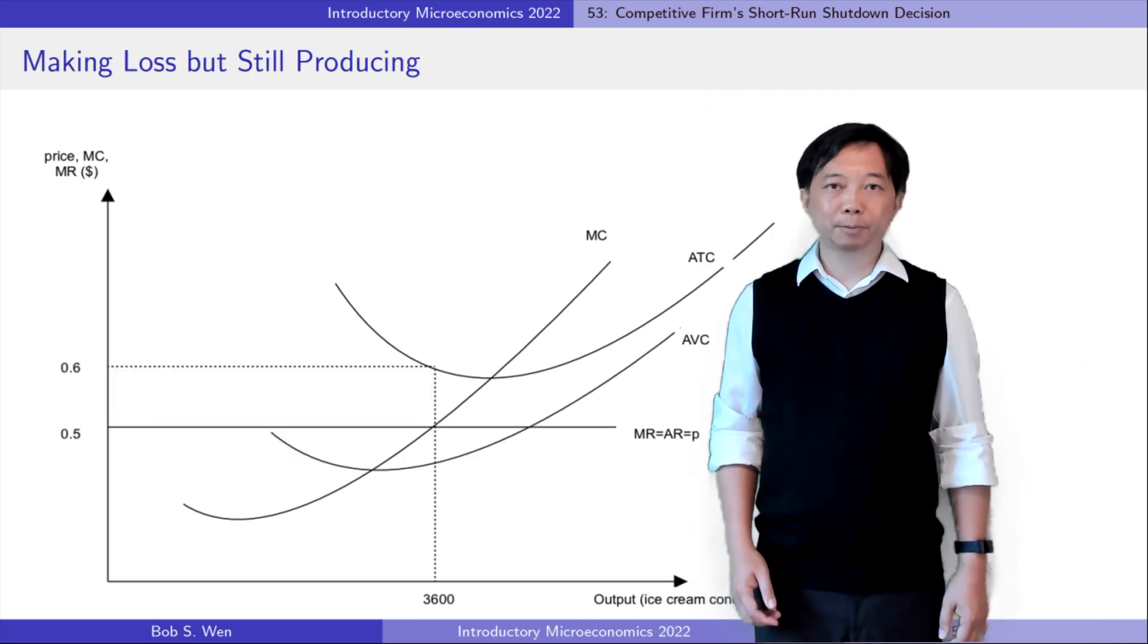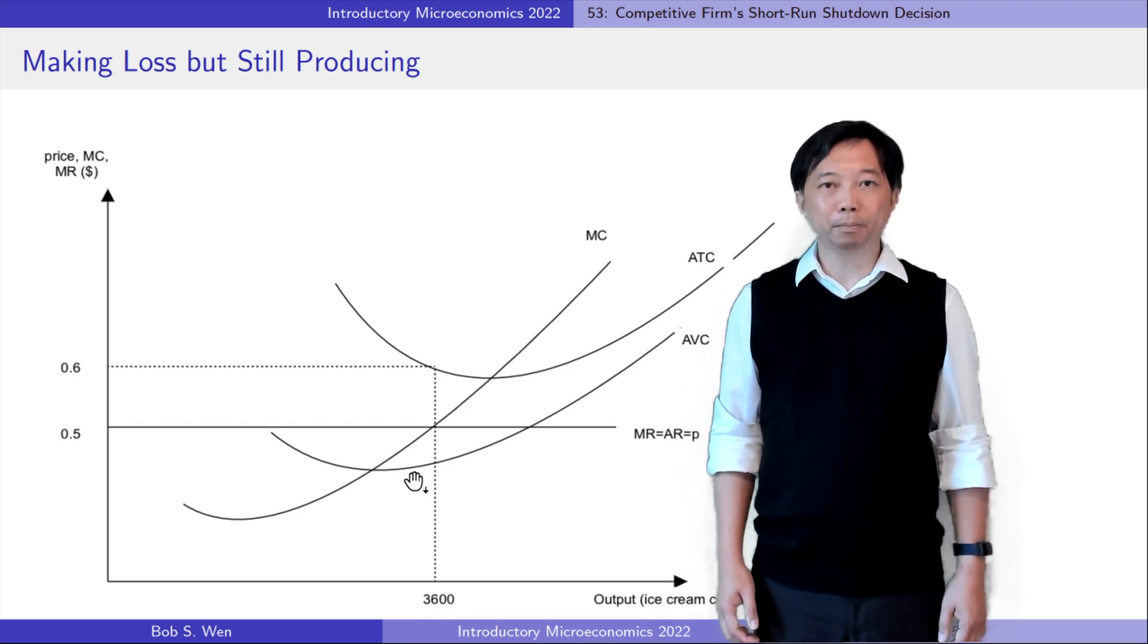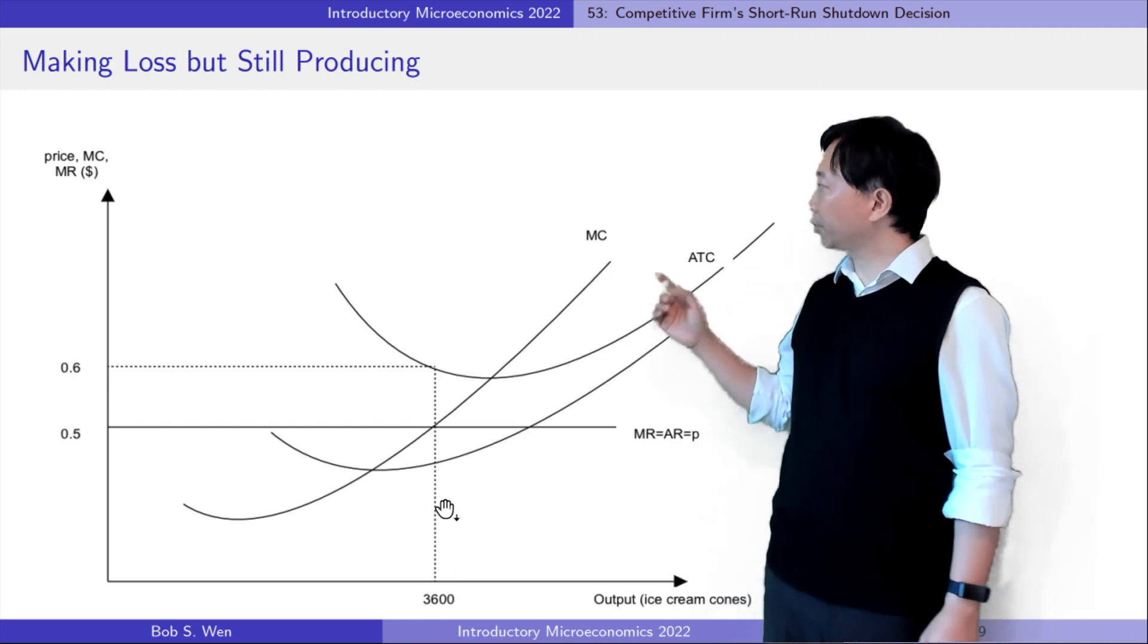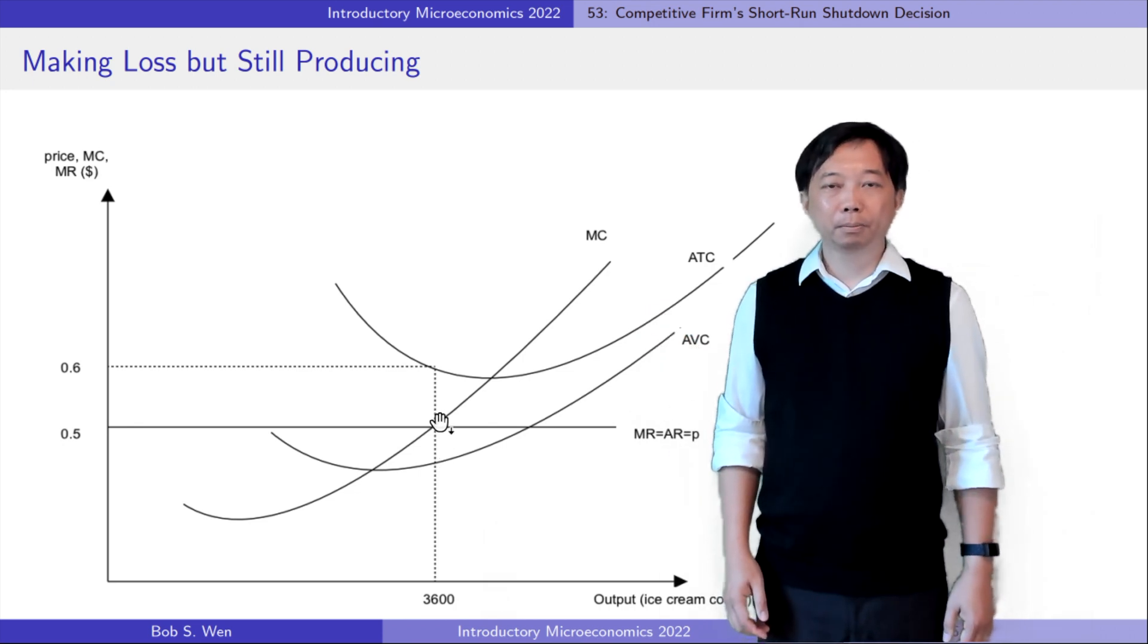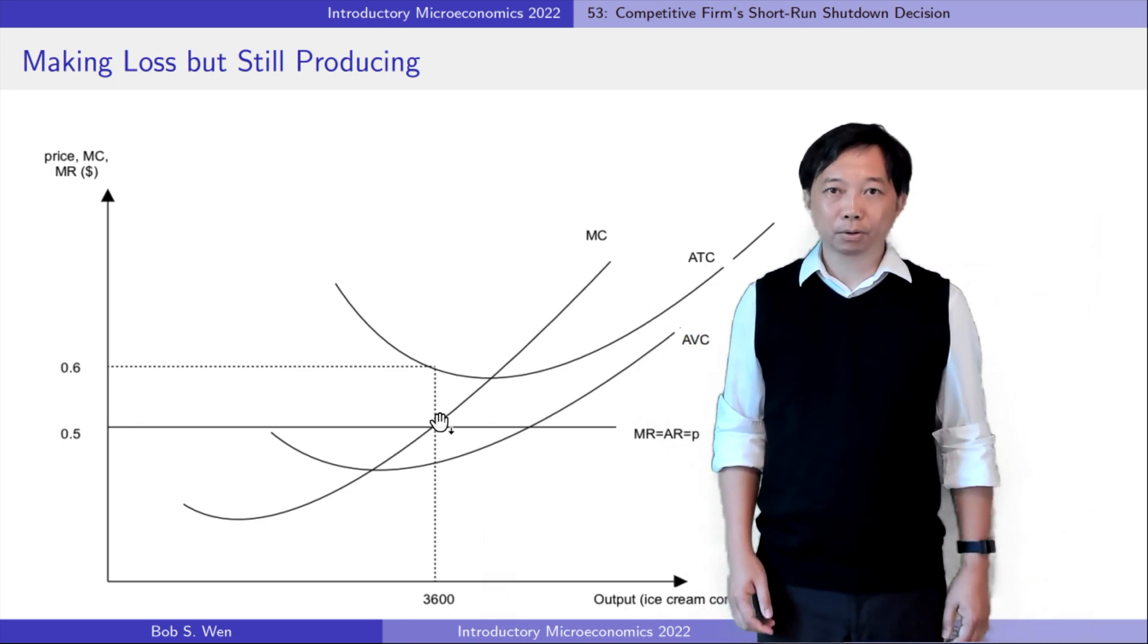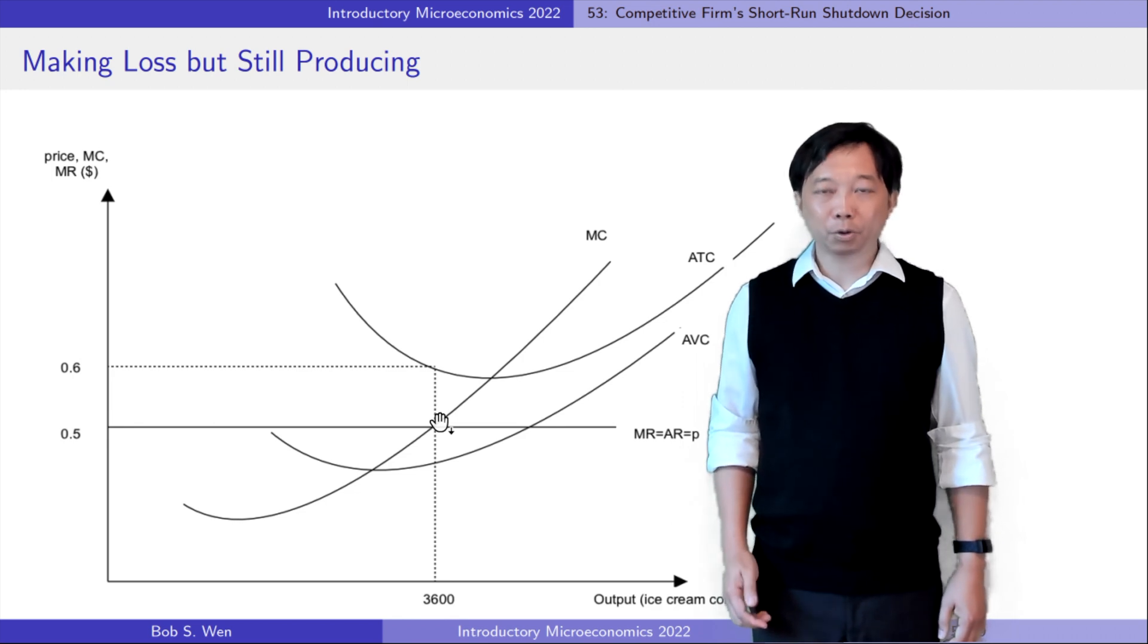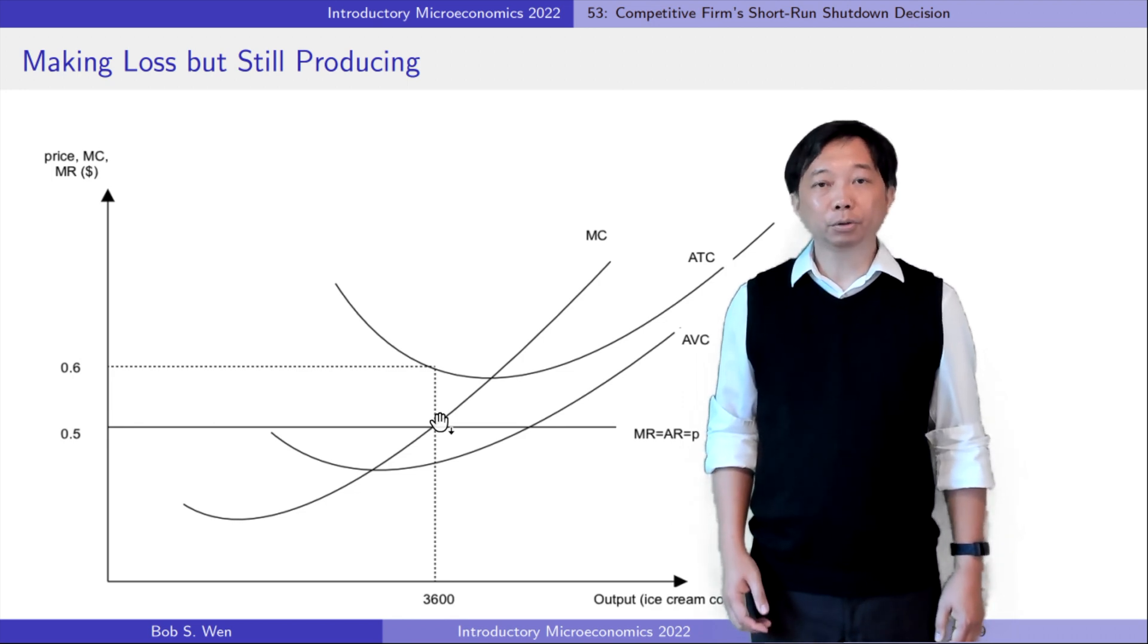If the market price is between the firm's minimum average variable cost and the firm's minimum average total cost, as this graph shows, the firm makes a loss, but it reduces its loss by operating rather than shutting down. So, the firm will still operate.